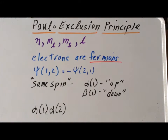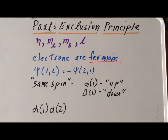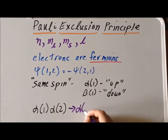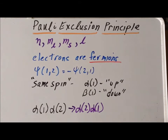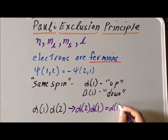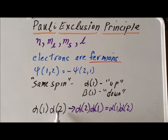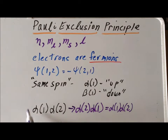We notice something special about this spin function: if we swap electrons one and two, that gives us alpha of two, alpha of one. But the spin functions commute, so that means this is exactly equal to alpha of one, alpha of two. This tells us that if we swap one and two, the wave function does not change sign, so this spin function is a symmetric function.